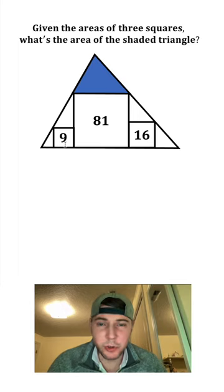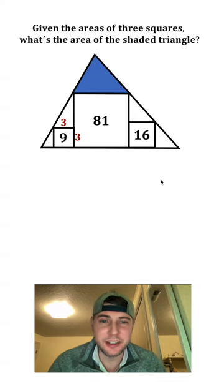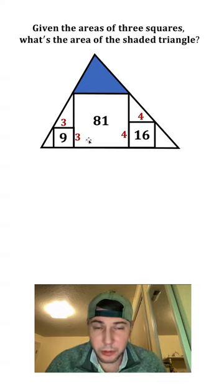So all three of these are squares. For this square to have an area of 9, that means the sides are going to be 3 by 3. And for this square to have an area of 16, its sides need to be 4 by 4. And the larger square will have sides 9 by 9.